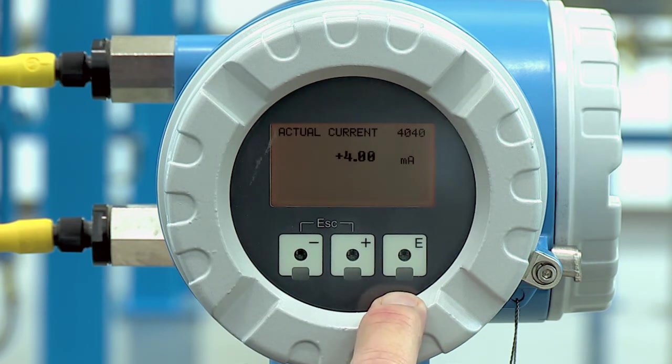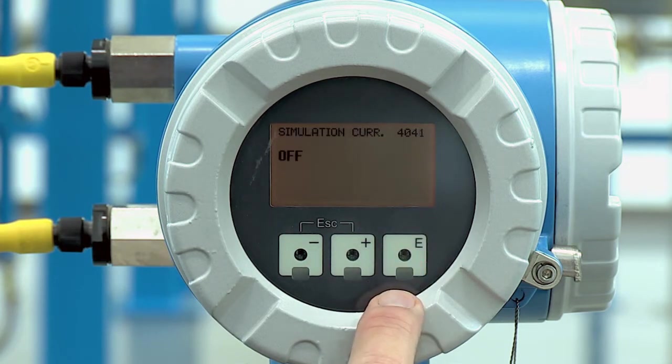You can see what the actual current that the meter is outputting right now. Right now there's no flow going through this meter so it's showing four milliamps. Push enter now we can go in and simulate the 4 to 20 milliamp current.